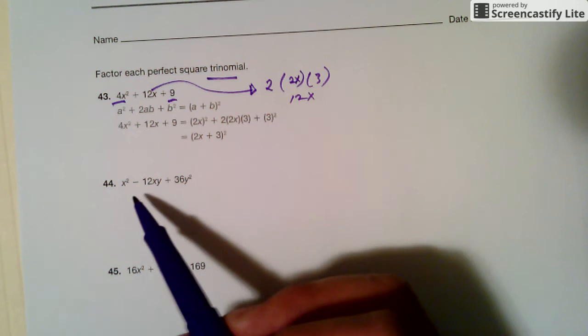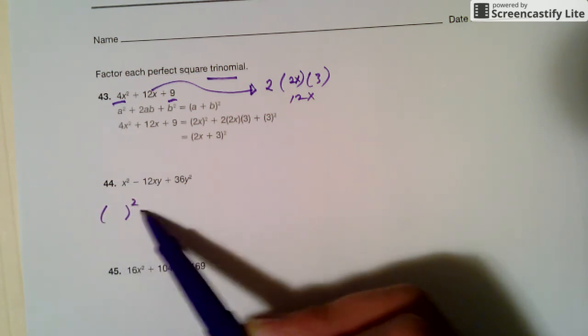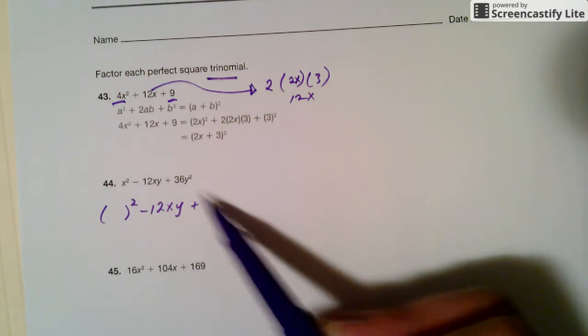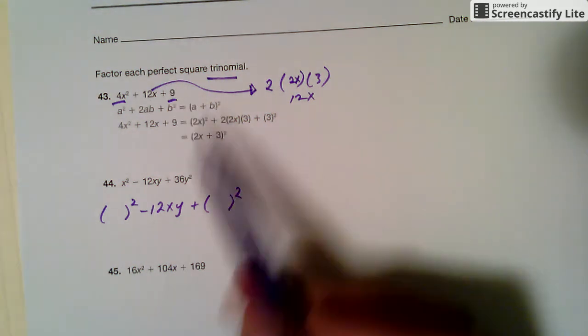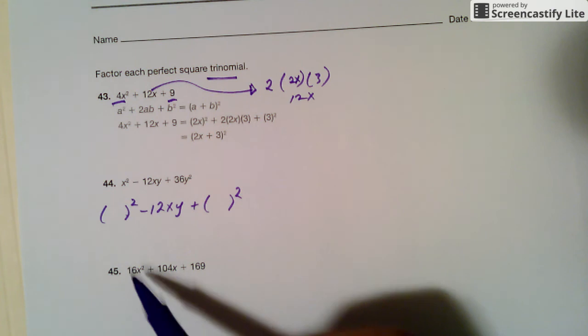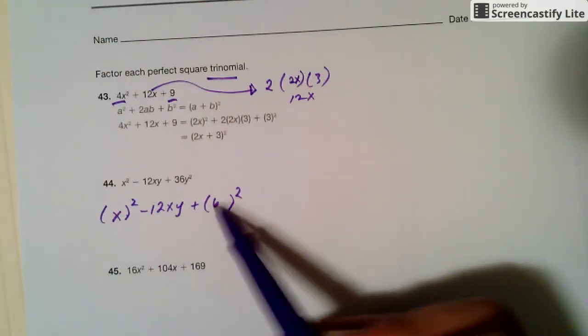First thing is, I want to rewrite this as a blank square. I'll leave this alone. And then I also want to write the last one as blank square. Perfect square trinomial. Three piece, and these two pieces have to be something square. So that's just an x there. Here would be 6y.